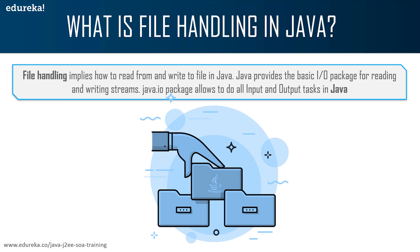In order to use a file class, you need to create an object of the class and specify the file name or directory name. First you write import Java dot IO dot file to import the file class, and then you create an object of a file and specify the file name.